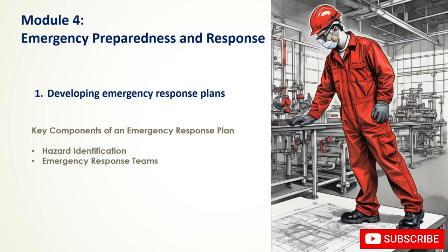Emergency response teams should be established with clear roles and responsibilities and provided with necessary training and equipment. Communication procedures should develop effective systems for alerting employees, emergency services, and other stakeholders, designating communication channels such as alarms and public address systems, and establishing a chain of command. Evacuation procedures should include clear escape routes, assembly points, and accounting procedures, with regular evacuation drills.